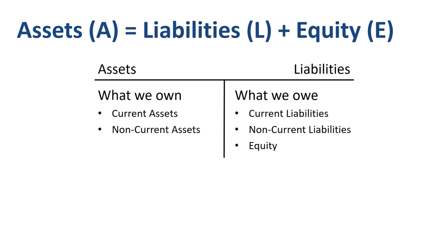This also means that on the journal entry level, any increase in one element of the accounting equation has to be offset by an increase in another element. Assets increase with a debit; liabilities and equity increase with a credit.